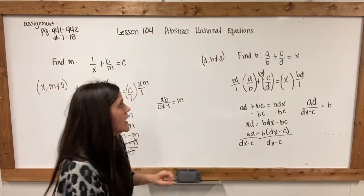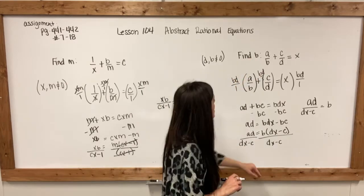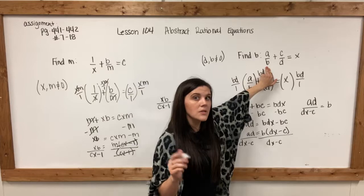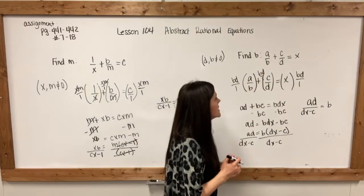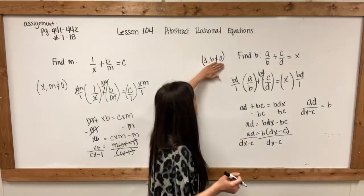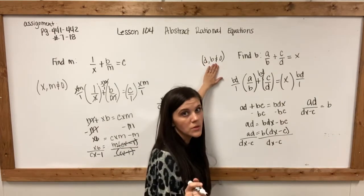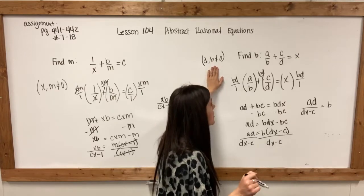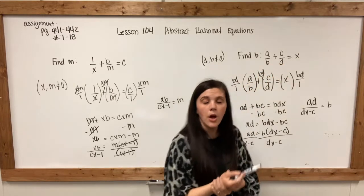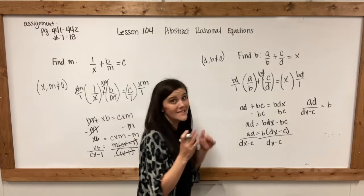Let's look at one more example. This time it says to find b. Again, b is in a denominator, so it is part of a fraction. We're going to do the same steps as before. It tells us right off the bat that d and b are not equal to 0. So I am going to first find a common denominator — here that would be bd.